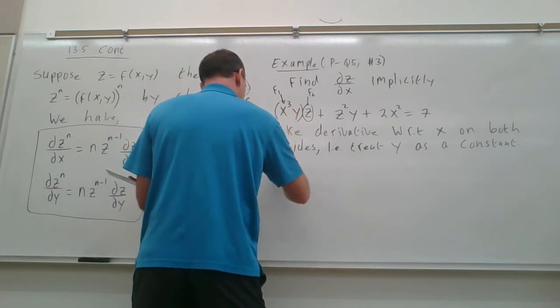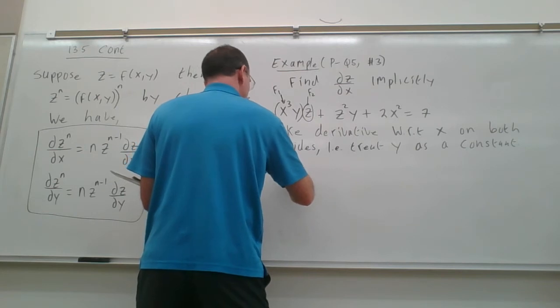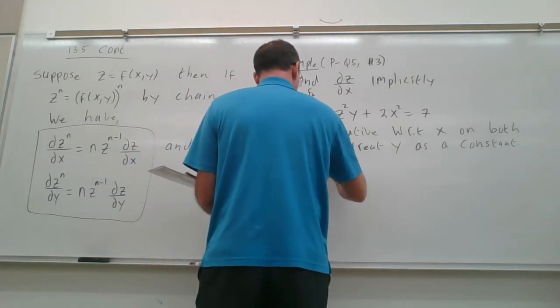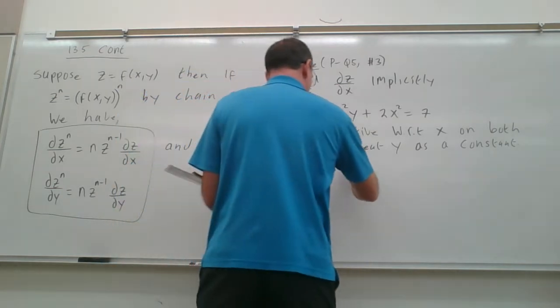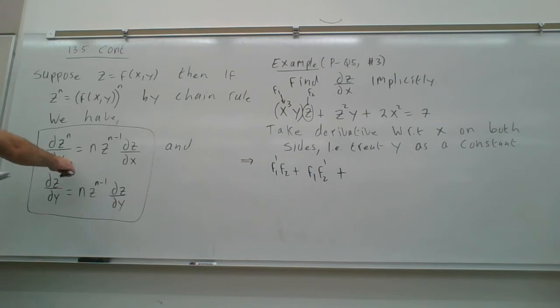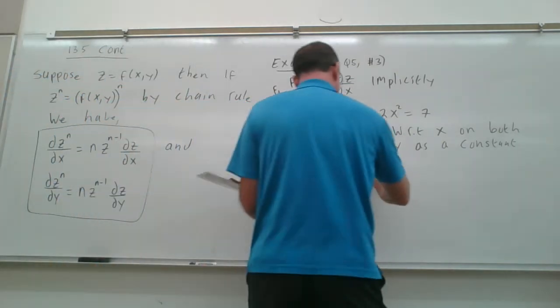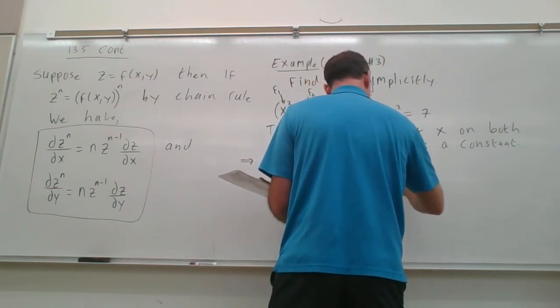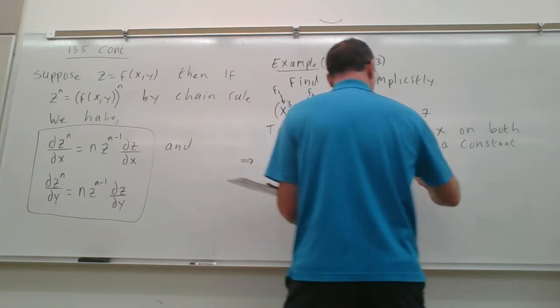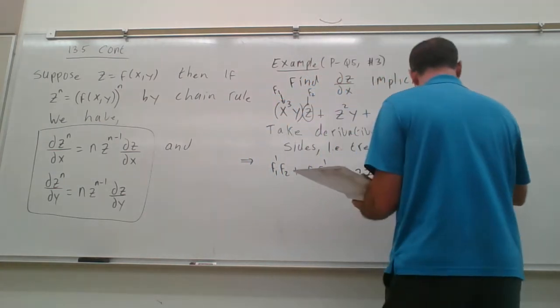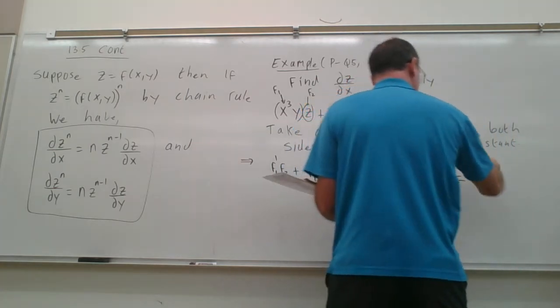And now, coming back over here using these guys, we're taking derivative with respect to x, so it would be 2z, then partial z with respect to x times y, plus it becomes 4x and derivative of 7 would be 0.